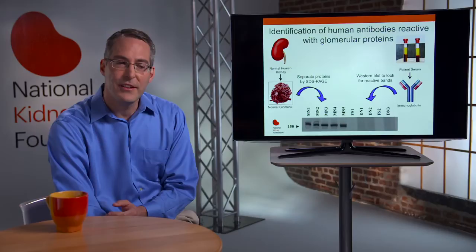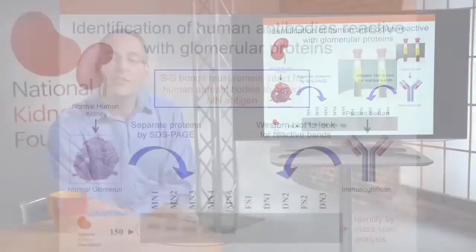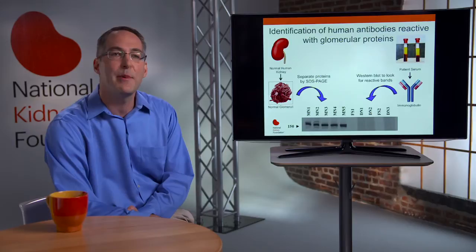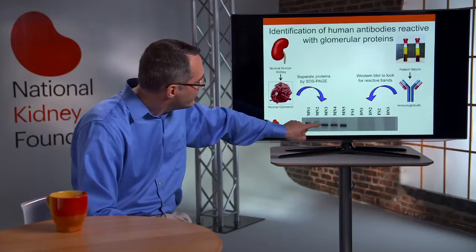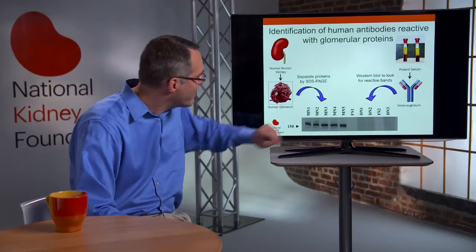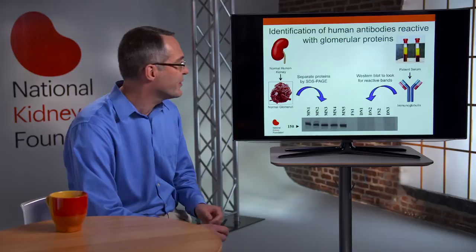Our approach to find the adult antigen is shown in this schematic slide. We start with discarded kidneys that can't be used for transplantation, isolate the glomeruli, and make protein extracts that we run on gel electrophoresis to separate them by size. Simultaneously, we collect serum samples from patients with membranous nephropathy or other controls and use the antibodies in that serum to react with the proteins separated from the glomeruli. We found this band consistently in membranous nephropathy cases that wasn't present in controls such as focal segmental glomerulosclerosis or diabetic nephropathy.